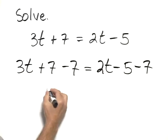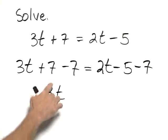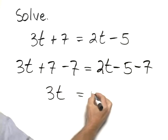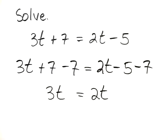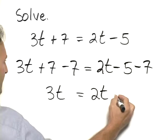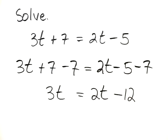Simplifying, on the left-hand side we have 3t because, of course, these sum to 0. On the right-hand side, we have 2t. Negative 5 minus 7 is the same as negative 5 plus a negative 7, so we have plus a negative 12.